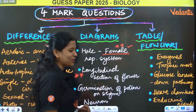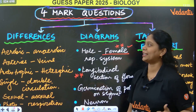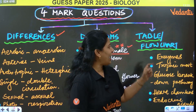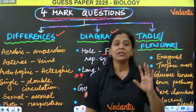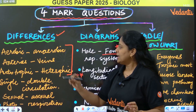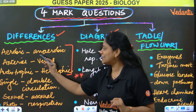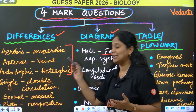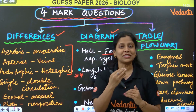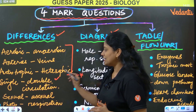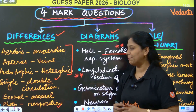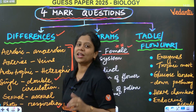Now coming to 4-mark questions, which are really very, very important. In 4-mark questions we will have differences, diagrams, and tables or flow charts. For differences, these three are the most important: aerobic vs. anaerobic difference, arteries vs. veins difference, autotrophic vs. heterotrophic difference. They may ask directly or with a slight twist. Then single vs. double circulation, sexual vs. asexual reproduction, photosynthesis vs. respiration — these are also important, but the top three are super important.